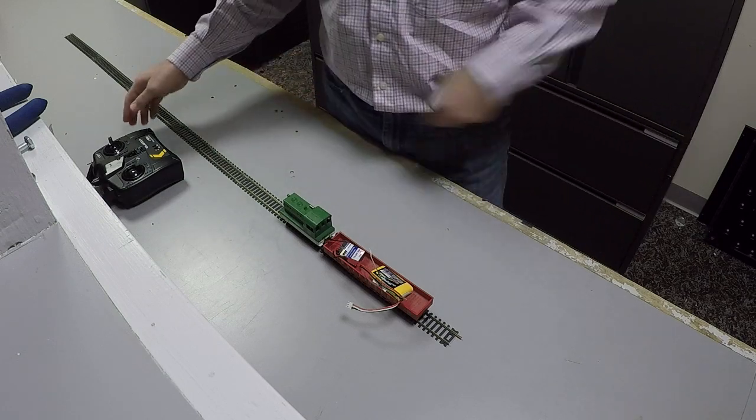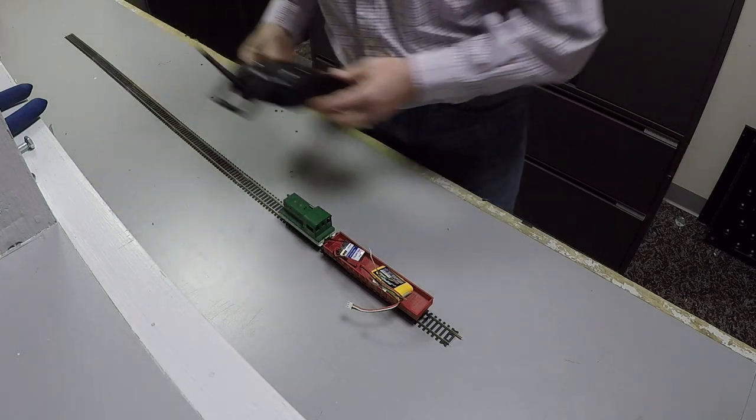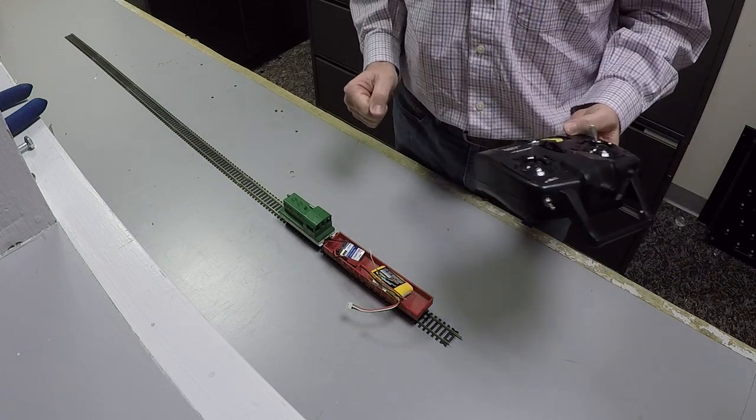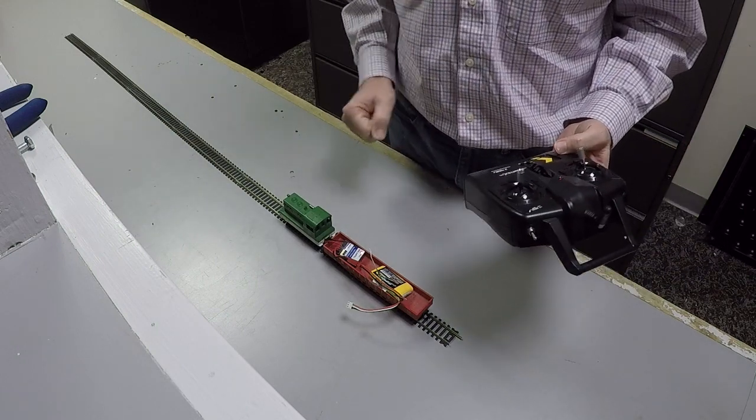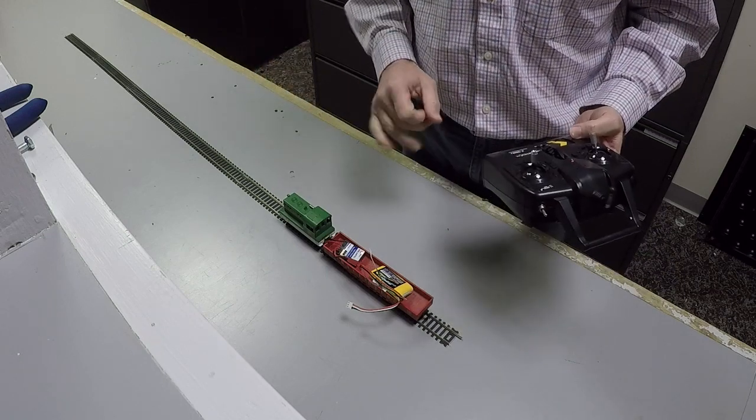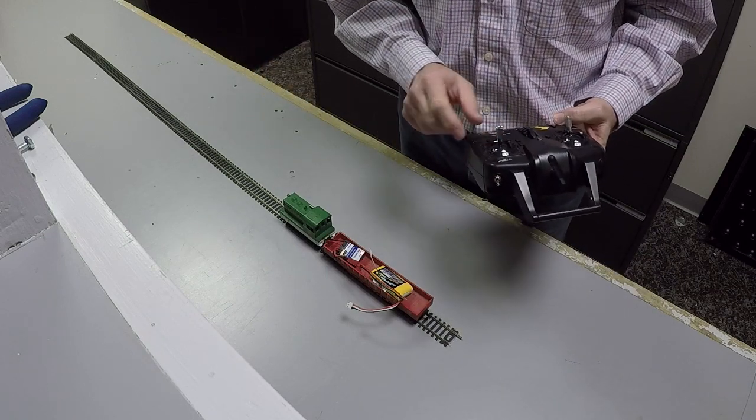Okay, what we have here is my attempt to run a battery powered HO locomotive on a dead rail using a transmitter receiver.